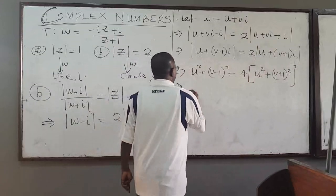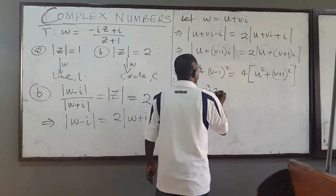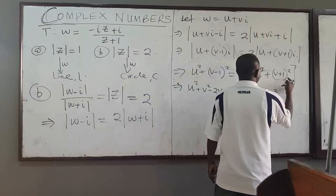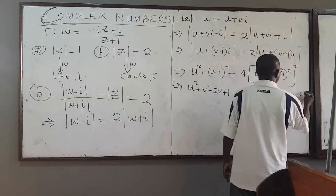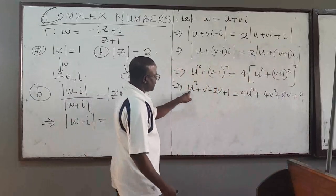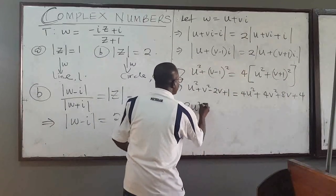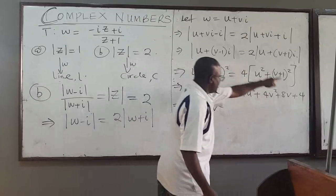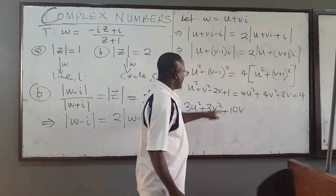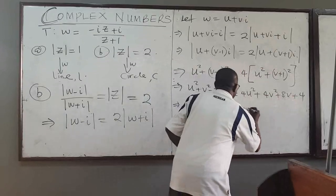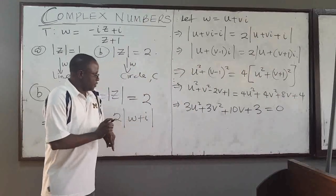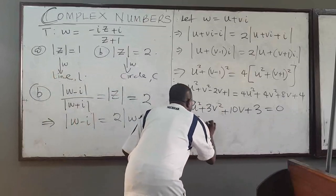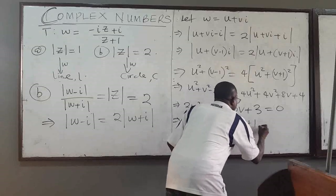Expanding: u² + v² - 2v + 1 = 4u² + 4v² + 8v + 4. Bringing terms across: 3u² + 3v² + 10v + 3 = 0. Dividing by 3: u² + v² + (10/3)v + 1 = 0. Now completing the square to determine the center and radius of the circle.